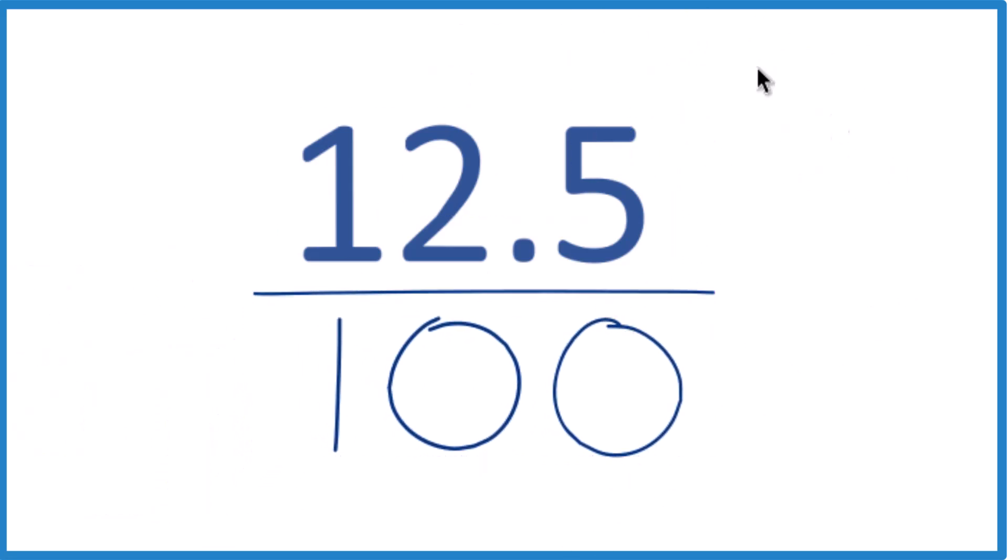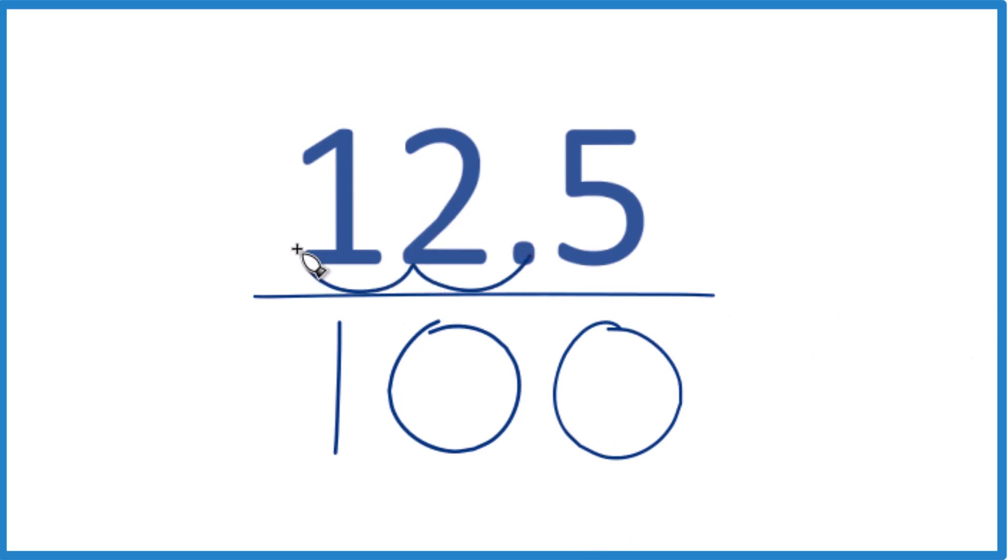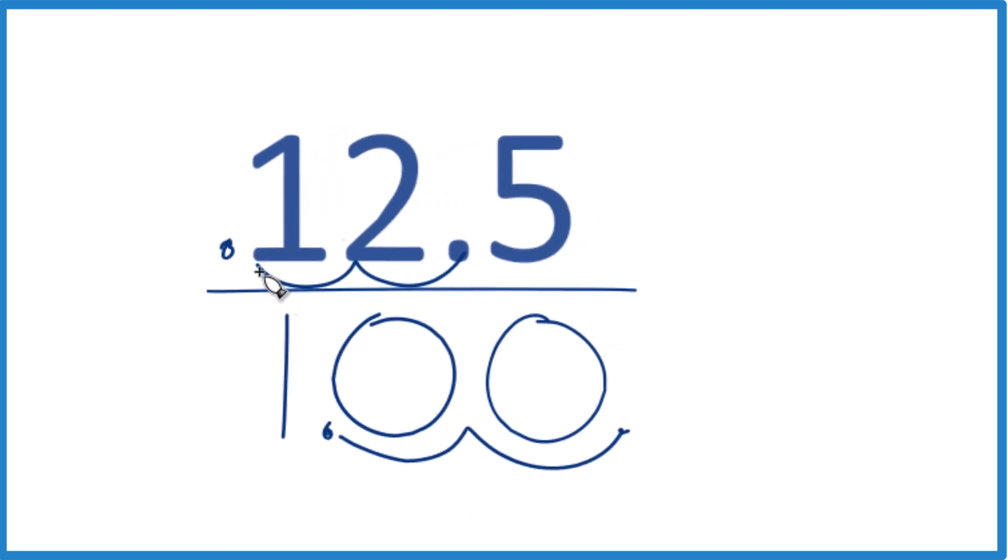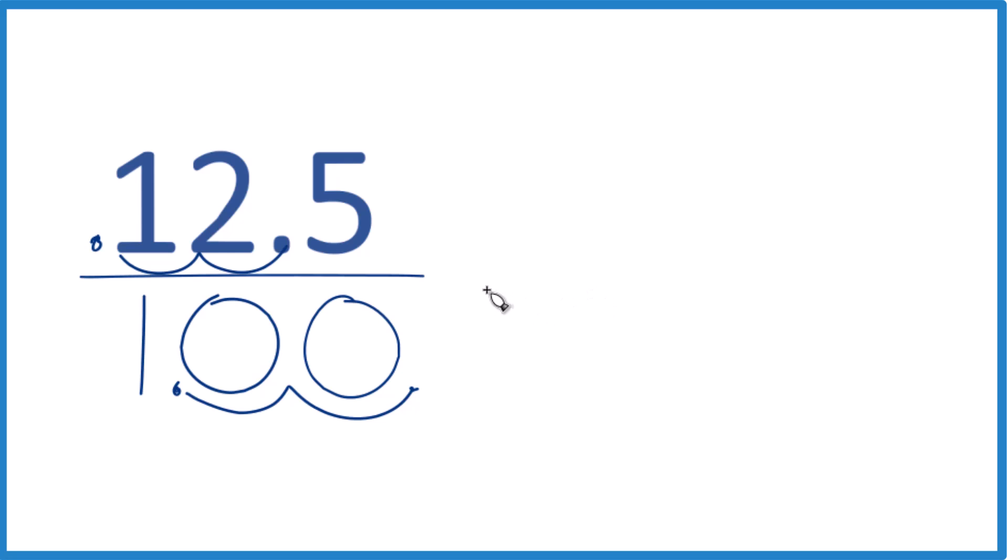Now we can change this to a decimal. We go over one, two places here, and then over here we go one, two places. So we have 0.125 over 1, which is just 0.125. That's our decimal. 12.5% equals 0.125 as a decimal.